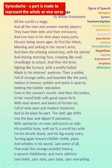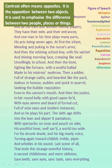Synecdoche is a figure of speech where a part is made to represent the whole, or the whole is made to represent a part. In the line 'made to his mistress's eyebrow' — the ballad is not written only on the mistress's eyebrow; it refers to the whole mistress. Hence, it is synecdoche. Contrast often means opposites, and it is the opposition of two objects used to emphasize the difference between two people, places or things. In the line 'full of wise saws and modern instances' — wise saws refers to olden sayings whereas modern instances refers to new examples. Hence, the figure of speech is contrast.